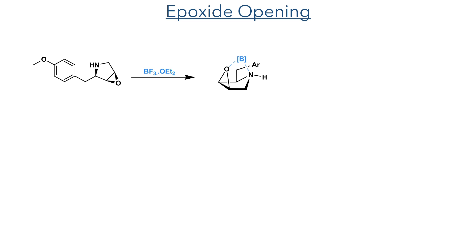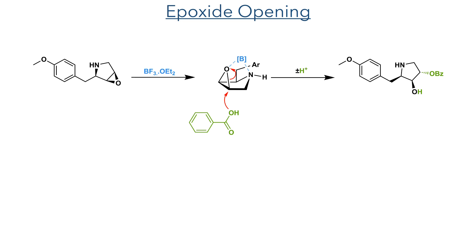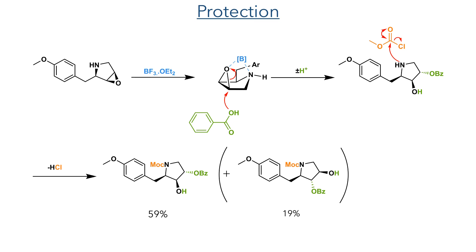In the next step, the 1,2-dioxygenation motif was created by opening this epoxide. The compound is first complexed to boron trifluoride, which can coordinate to both the nitrogen and the oxygen atom. Benzoic acid is then added, and this preferentially attacks the less sterically hindered side of the epoxide, forming the benzoate ester. Upon completion of this step, sodium carbonate and methyl chloroformate are added to the reaction mixture, reacting with the amine to protect it as a Moc group. This formed the target compound in a 59% yield, along with a 19% yield of the regioisomer.